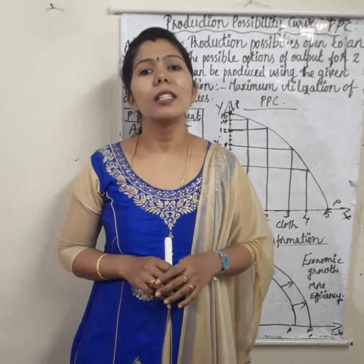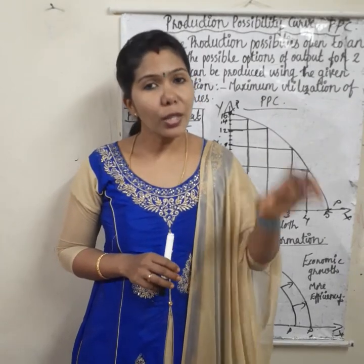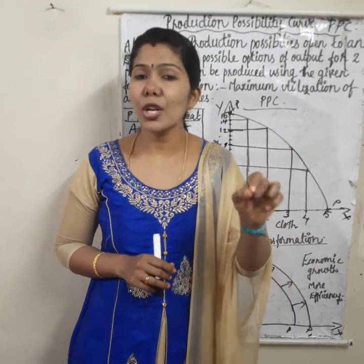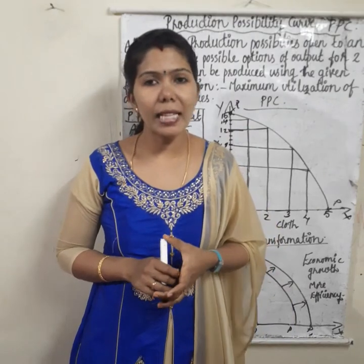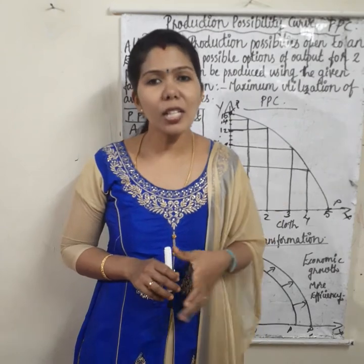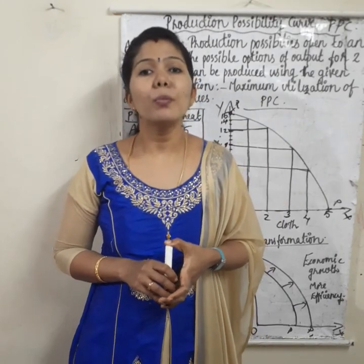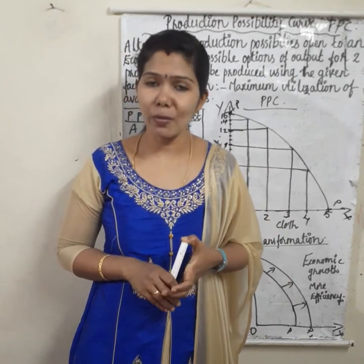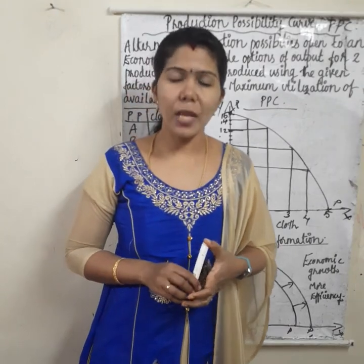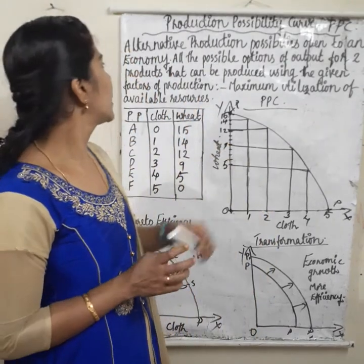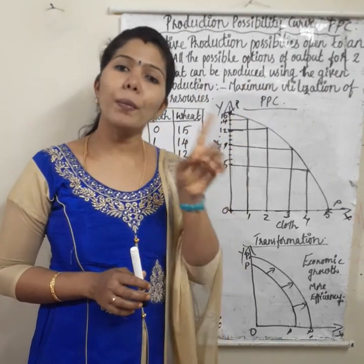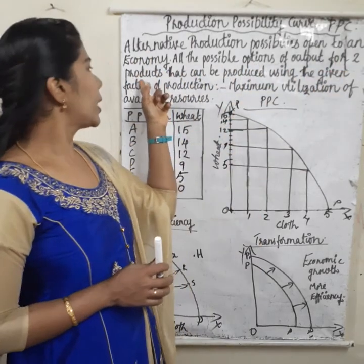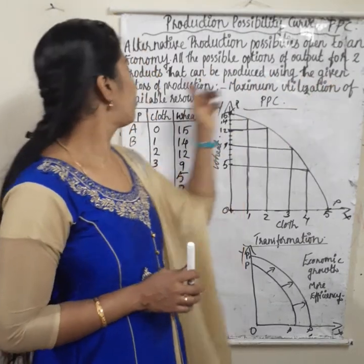Assume that there are only two commodities produced in an economy. In order to produce more units of one commodity, we have to curtail or sacrifice the production of another commodity. The reason behind that is we have limited resources only. With limited resources, we have to produce maximum output. Production possibility curve explains all the possible options of output for two products that can be produced using the given factors of production.